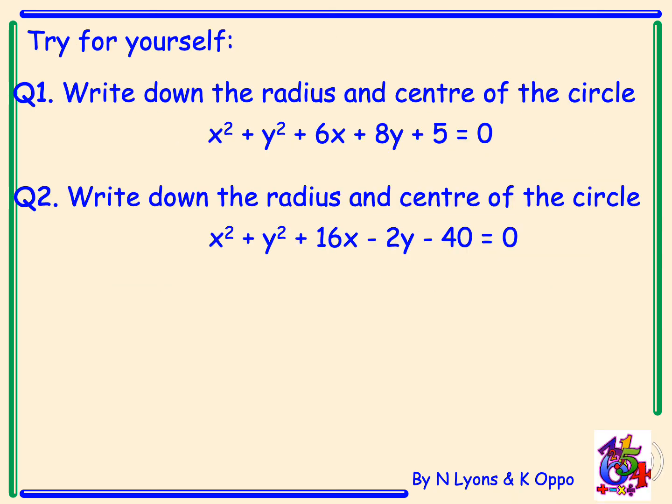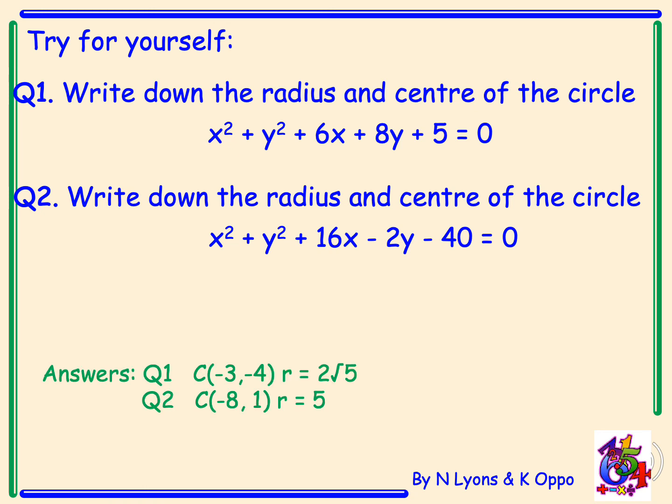Now try these examples for yourself — please pause the video. The answers for question 1: the centre was negative 3, negative 4, and the radius was root 20, which simplifies to 2 root 5. Please remember to fully simplify surds to gain full marks in the Higher exam. For question 2: the centre is minus 8, positive 1, and the radius is 5.